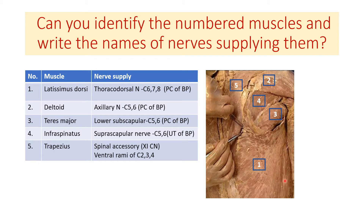The number one muscle is the latissimus dorsi, and it is supplied by the thoracodorsal nerve, which is a branch of the posterior cord of the brachial plexus. Number two is the deltoid muscle, and it is supplied by the axillary nerve, which is also a branch of the posterior cord of the brachial plexus. Number three is the teres major muscle, which is supplied by the lower subscapular nerve — again a branch of the posterior cord of the brachial plexus.